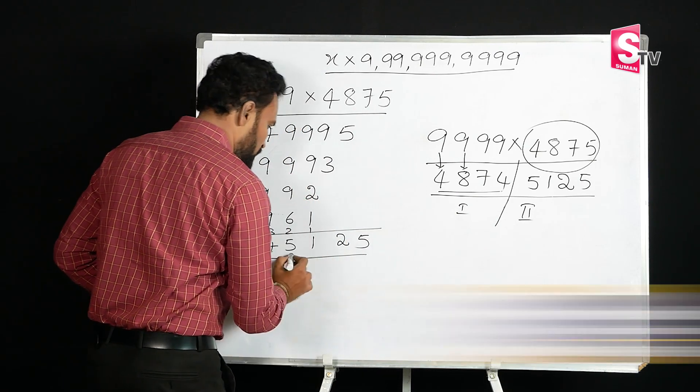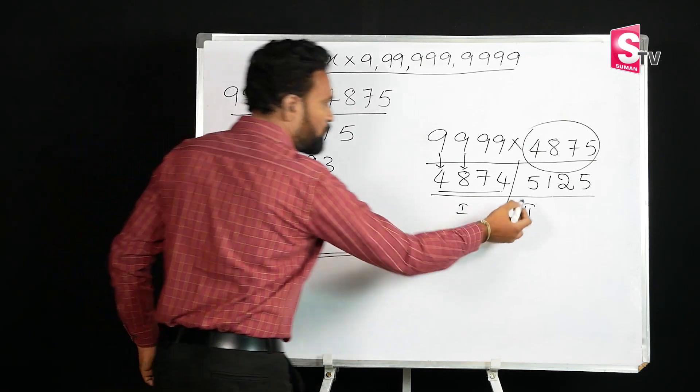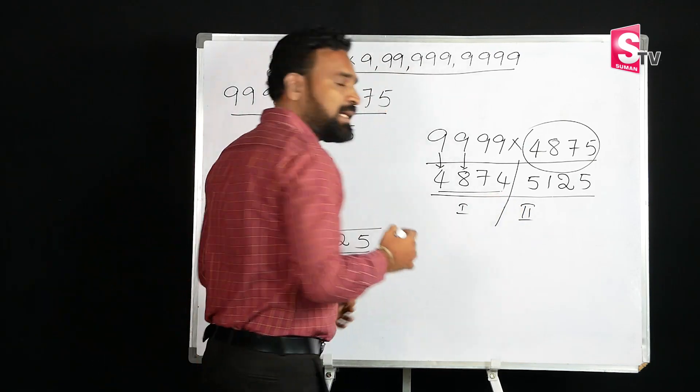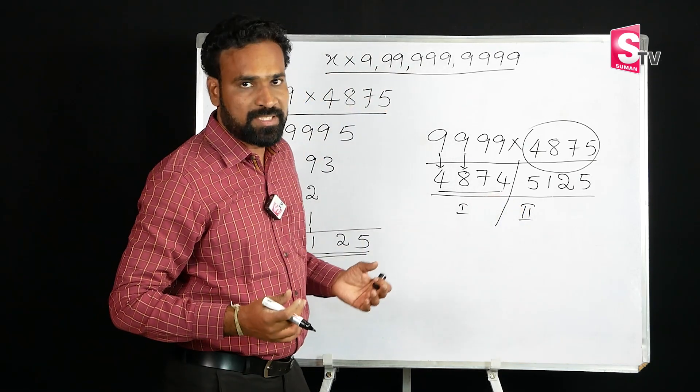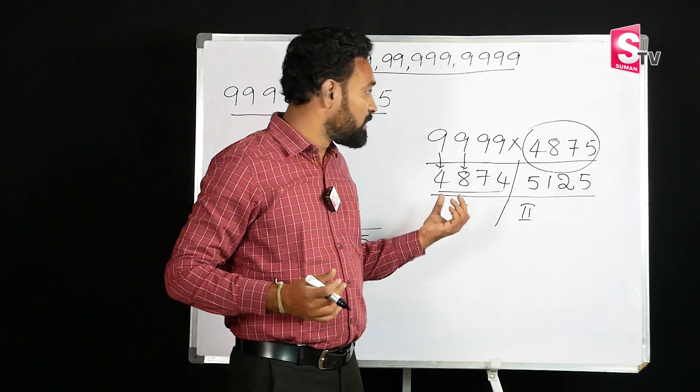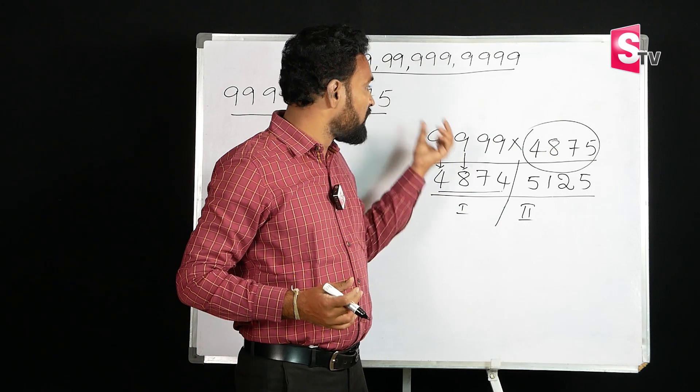So the answer is 4874 | 5125. That is the answer in a single line. This method only applies to numbers with 9s.